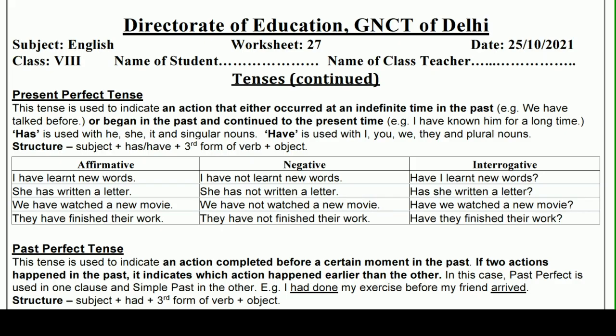Hello and welcome to Lavneesh Sarki class. This is Direct Rate of Education GNCT of Delhi's worksheet number 27, and it is only for class 8 students. It has been taken from the subject English, and we will learn and understand tenses in this worksheet. Today we are taking Present Perfect Tense and we will see where we use it.